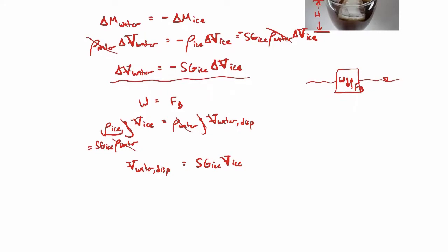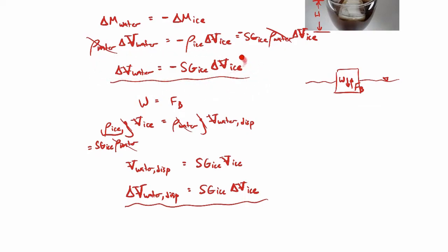Going one step further, I'll take a delta of both sides of that force balance equation. So instead of volume of water displaced, we have the change in the volume of water displaced: delta V water displaced equals the specific gravity of ice — which is just a constant, no delta needed — times delta V of the ice. It's kind of like taking a derivative; I just took a delta of both sides. If you look at the expression from conservation of mass and this expression from the force balance, you'll see the right-hand sides are actually the same except for a negative sign.